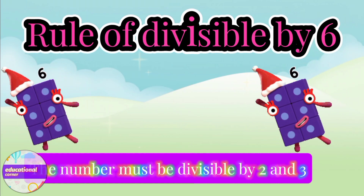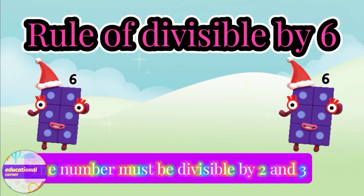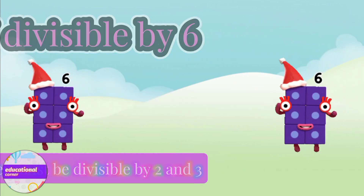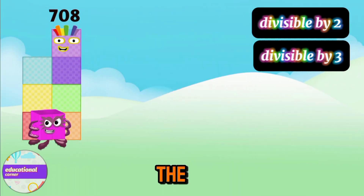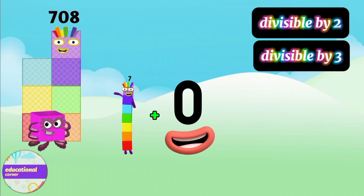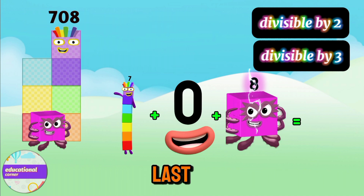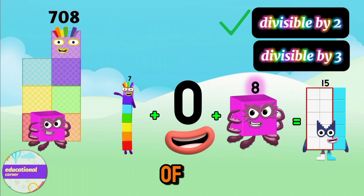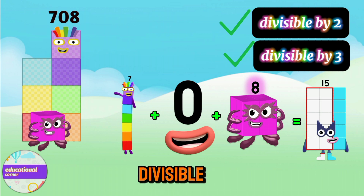Rule of divisibility by six: the number must be divisible by both two and three. Let's understand by examples. Is 708 divisible by six? Check the last digit — it is even, so the number is divisible by two. The sum of the digits is 15, which is divisible by three. So the number 708 is divisible by six.